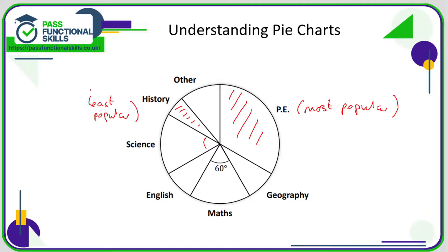We can also from some basic information we know that the maths slice is 60 degrees. Now the full pie is obviously 360 degrees. There are 360 degrees in a circle.